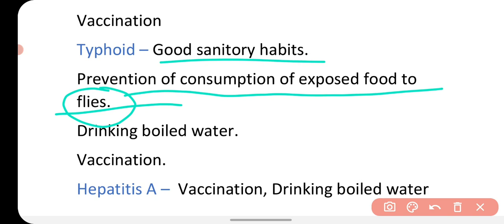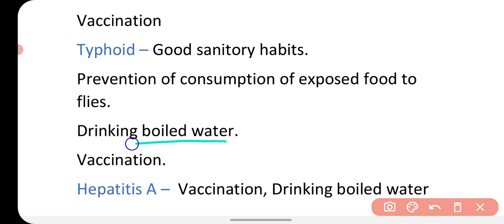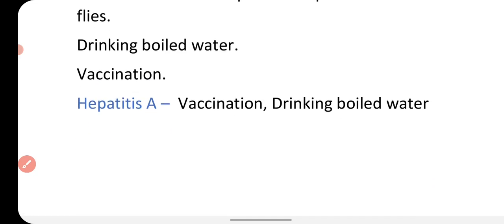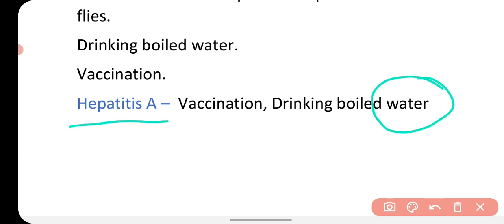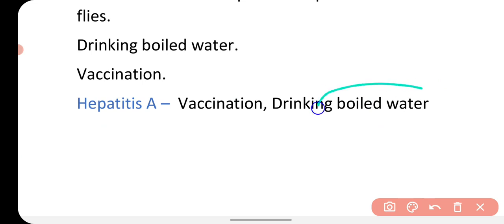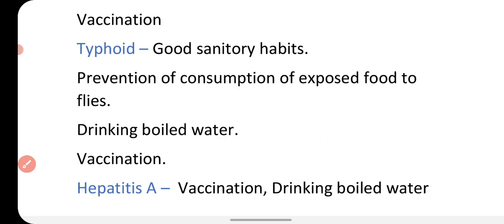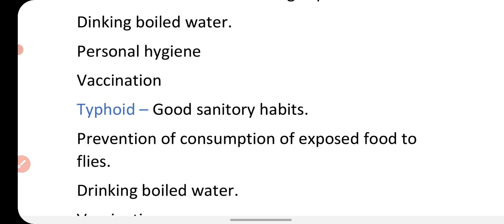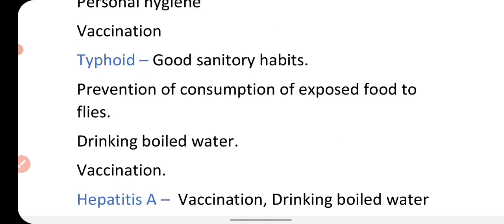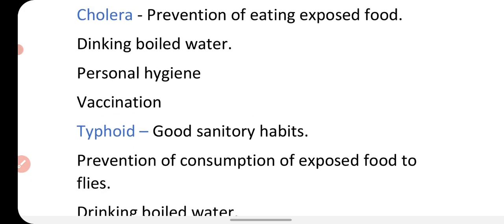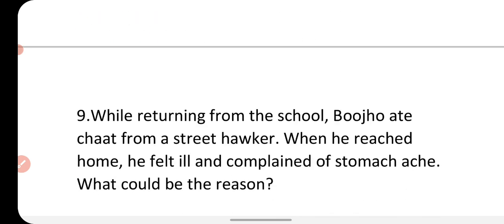You should drink boiled water and get vaccinated to prevent typhoid. For hepatitis A, vaccination is available and you should drink boiled water, because the virus of hepatitis lives in water — if water is contaminated with this virus, you can get this disease, so boil water before drinking. Cholera and typhoid are bacterial diseases, while hepatitis A is a viral disease; all are communicable diseases and to prevent them you must follow good sanitation habits.